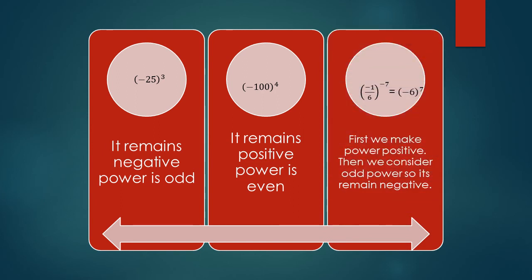In third one, there is a fraction. Minus 1 upon 6 to the power minus 7. First, we convert minus 7 into plus. So we will reciprocal the term minus 1 upon 6. It will become minus 6 upon 1. And minus 7 will be converted into plus 7. So now we consider this is odd power, so it remains negative.